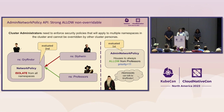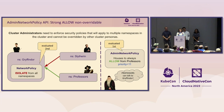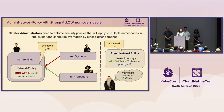Admin Network Policy has the highest precedence, so it will be evaluated first. When professors try to connect to the Gryffindor namespace, this connection is matched by an admin network policy and the connection is allowed. But for Slytherin, their connection to Gryffindor is not matched by an admin network policy, so the Gryffindor network policy applies and the connection is still denied. There is also a priority field in the admin network policy object that defines in which order admin network policies will be applied.